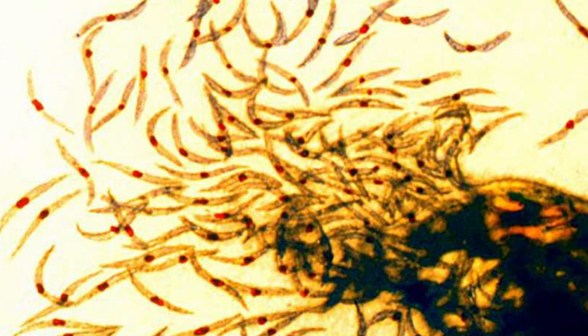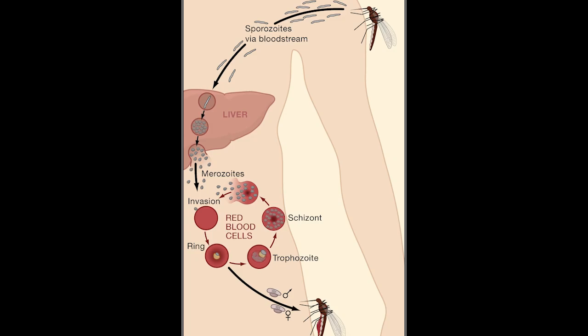The sporozoites will make their way to the infected person's liver, where they will begin to reproduce asexually. The malaria parasite will begin to reproduce within the liver cells, until they reach a critical mass and rupture the cell, releasing more of the organisms to continue to infect more liver cells.